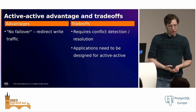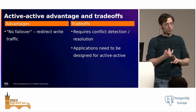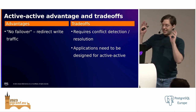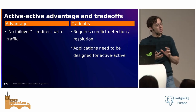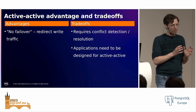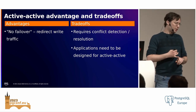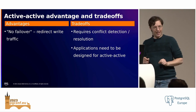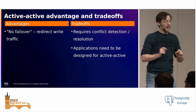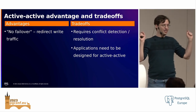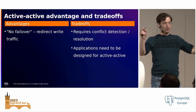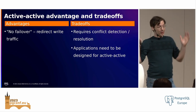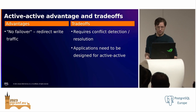When active-active works, you've pushed the high-availability problem from your database to your networking layer — it's all about rerouting traffic. But there are more trade-offs. The database is no longer your problem in high availability, as long as you have conflict detection and conflict resolution. But you're telling application developers they've got to do work now. Multiple systems might write to the same row at the same time with different changes — which is the source of truth? We've introduced a system that can create a split-brain scenario.